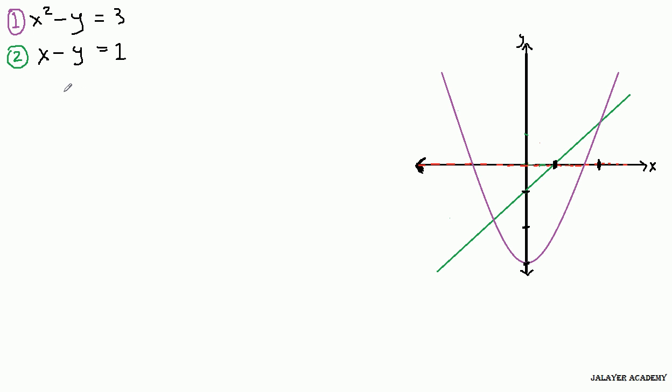So how do we find points of intersection? Well, first thing that we can do, we can graph them, which I have already gone ahead and done here. But sometimes that's a much more cumbersome way of doing it. It's much easier to do it analytically. So one thing we can do is we can get one of the variables, usually helpful to get y alone for each equation, on one side of the equation, and then set the equations equal to each other. So what do I mean? Well, let's start with the first one.